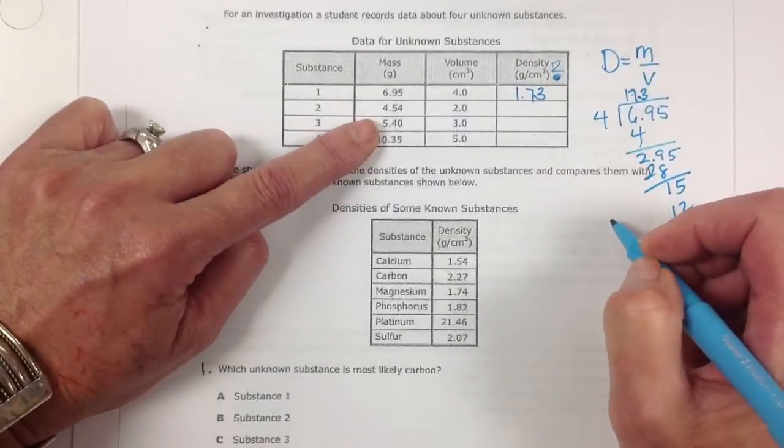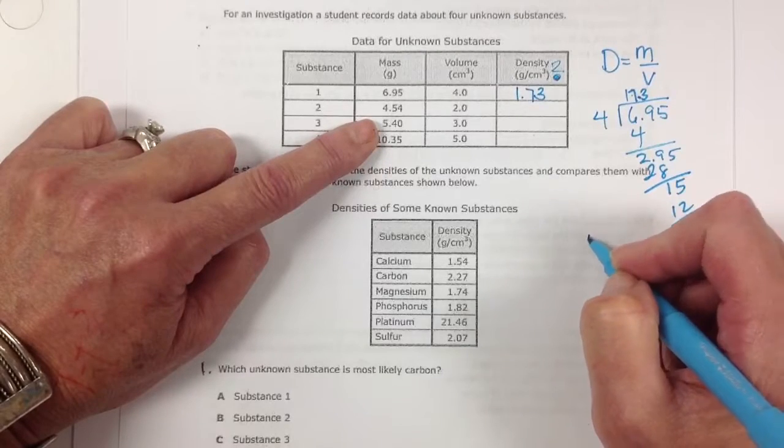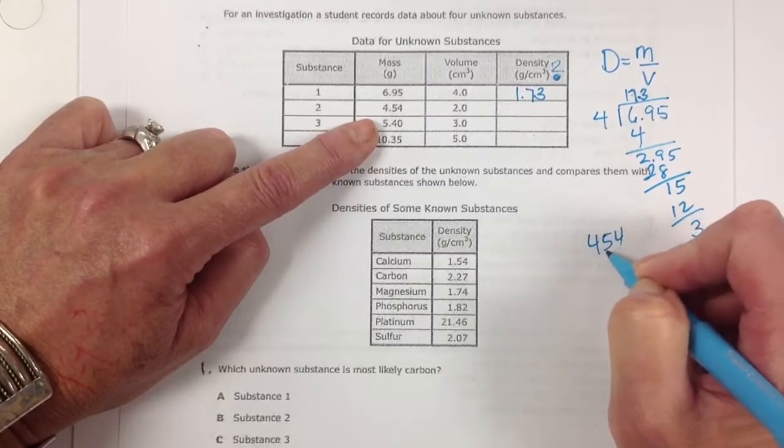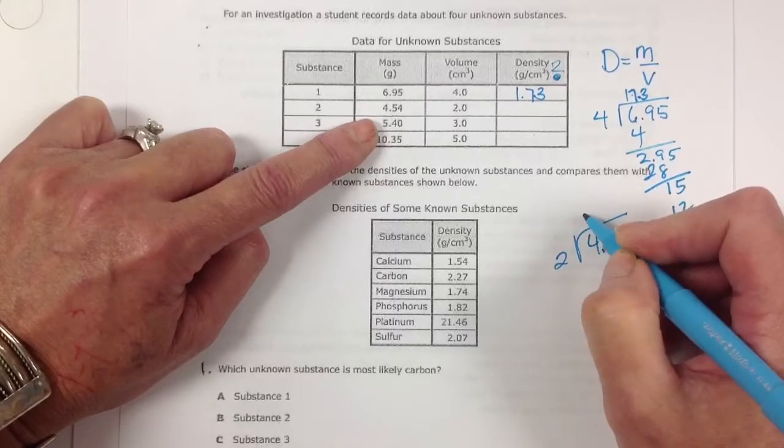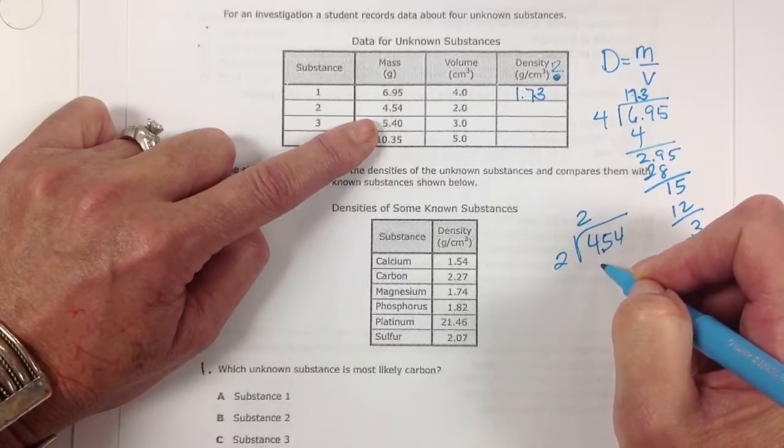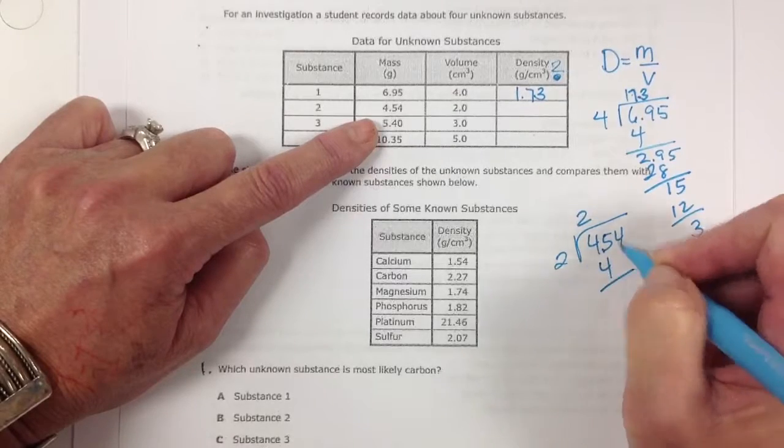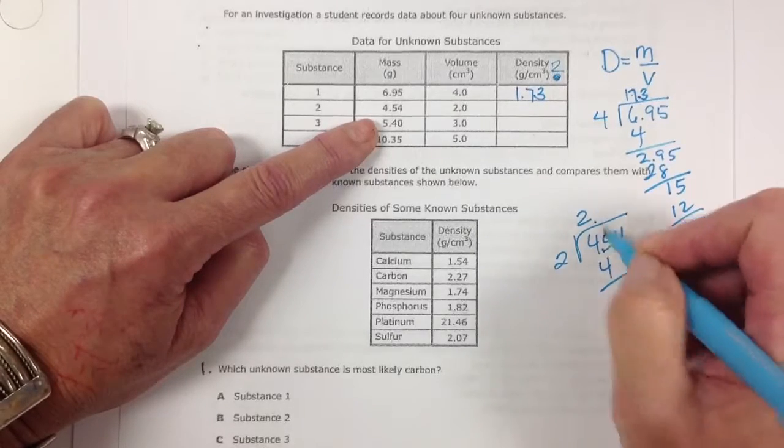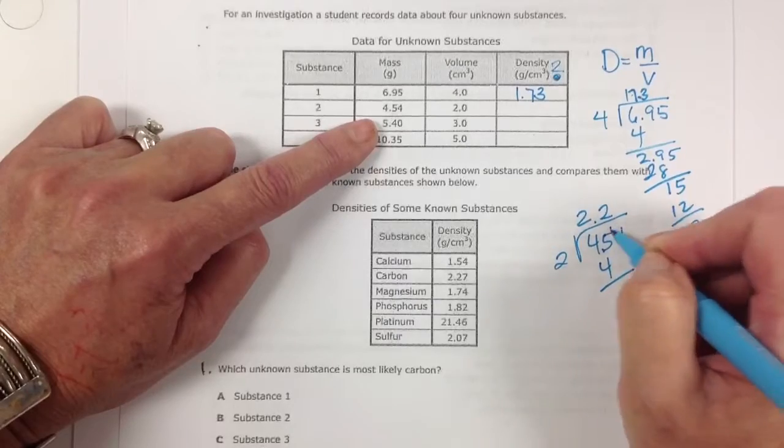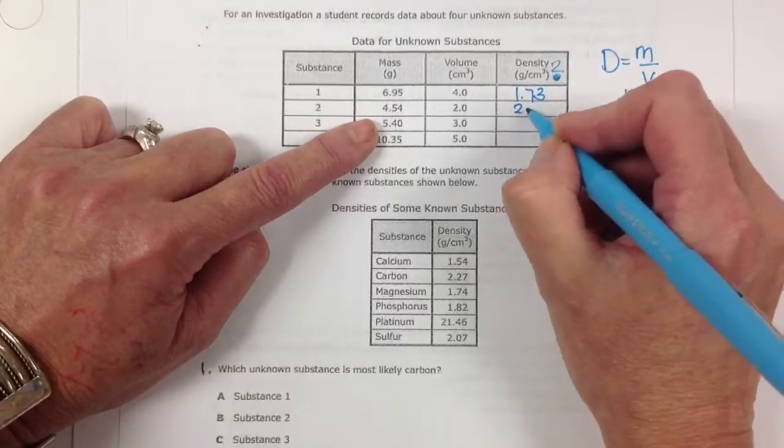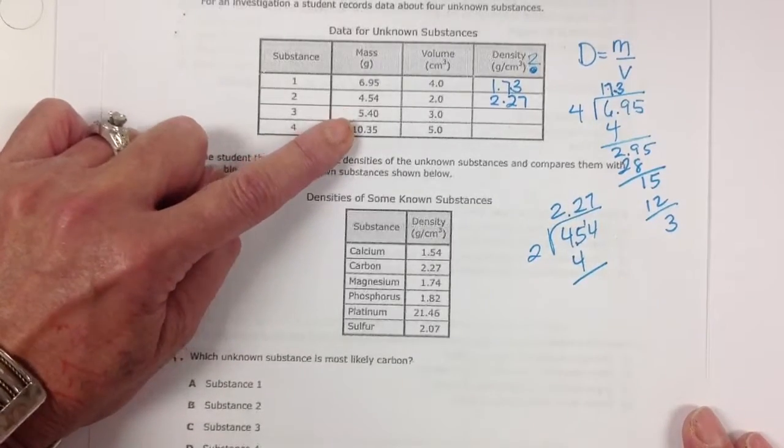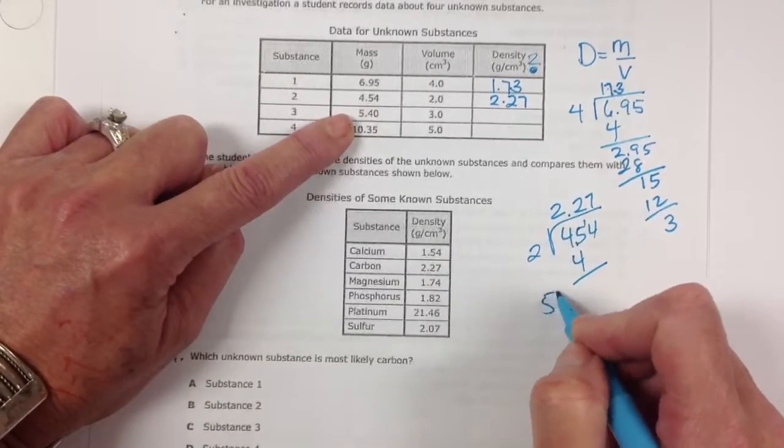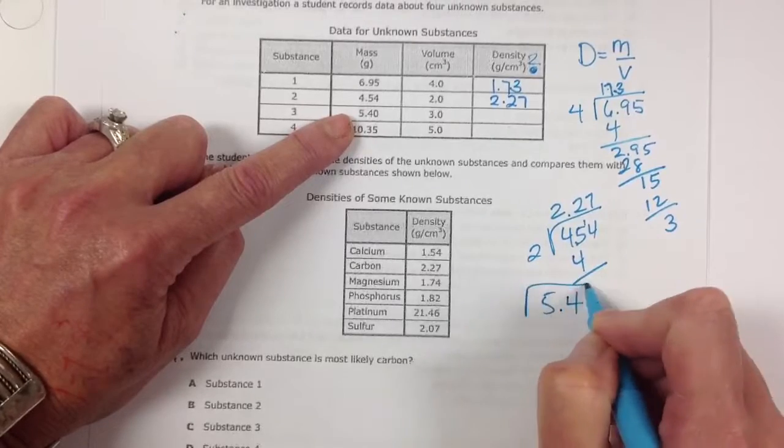Here we have substance number 2. Mass is 4.54 divided by 2. That goes 2 times. And then 2 times again. And then 7. So it's 2.27. So we're going to keep doing this math so we get to where we need to be.